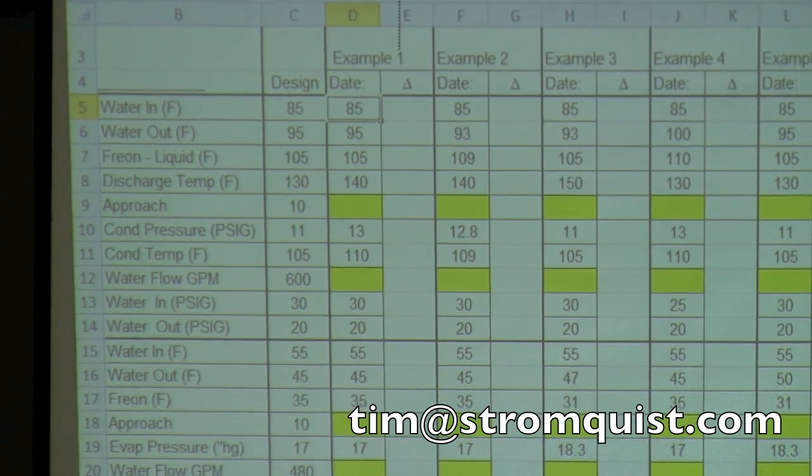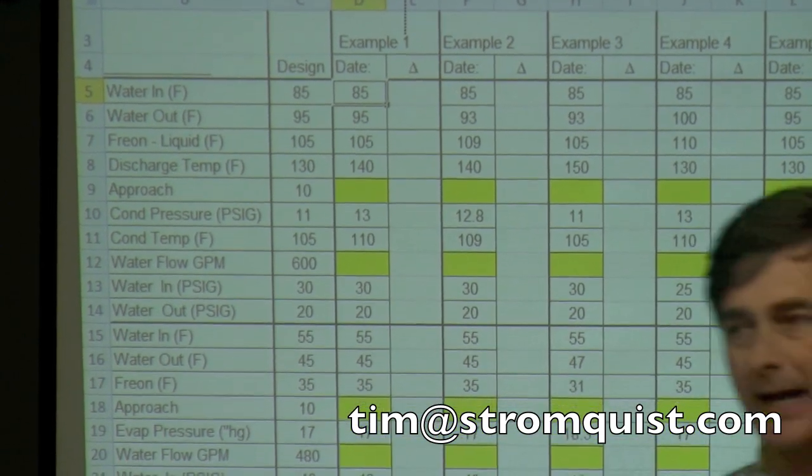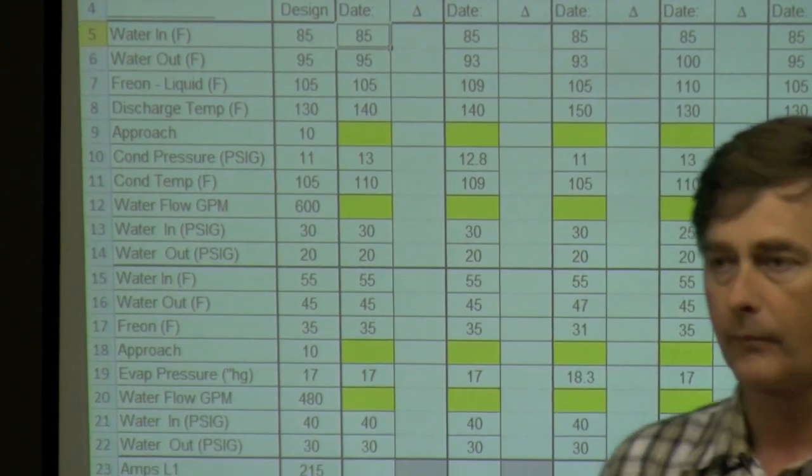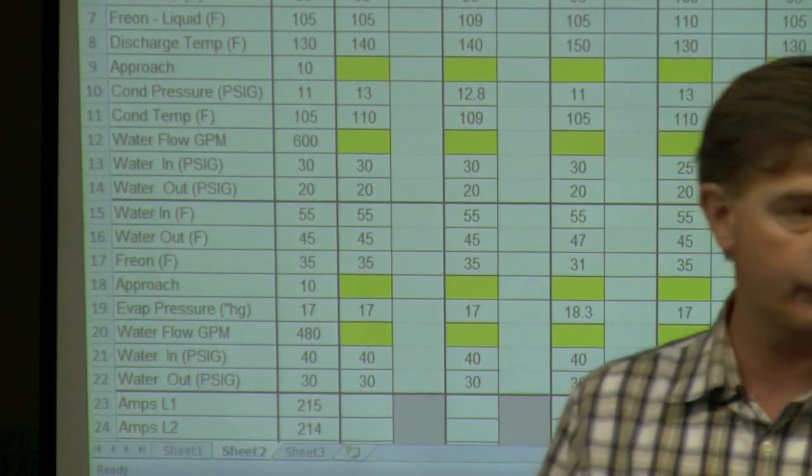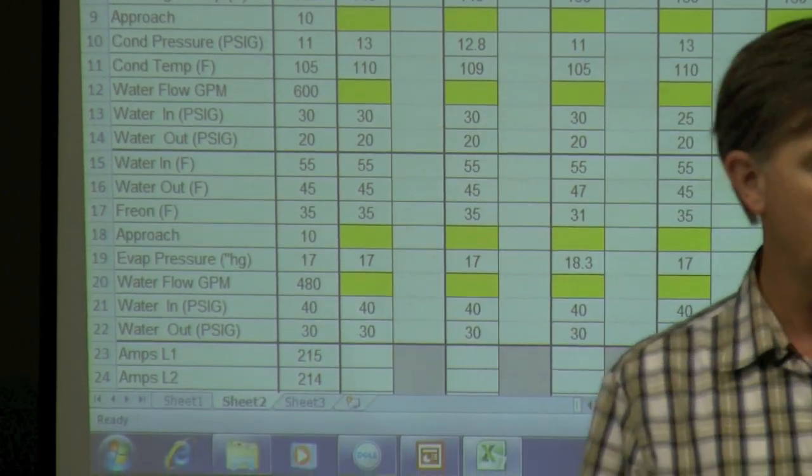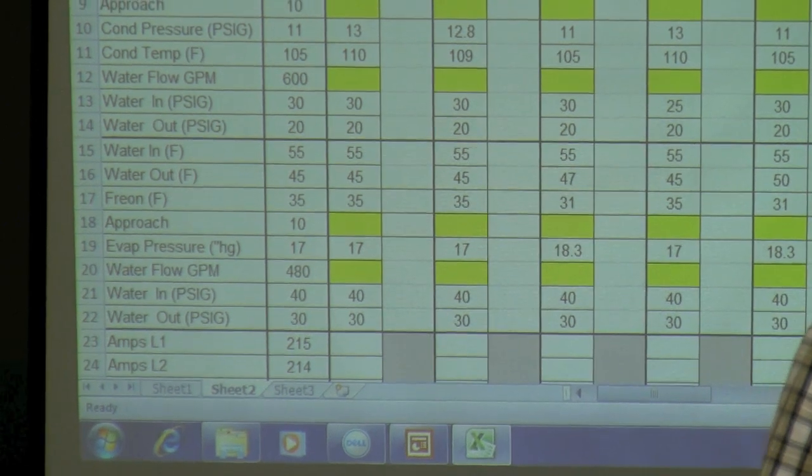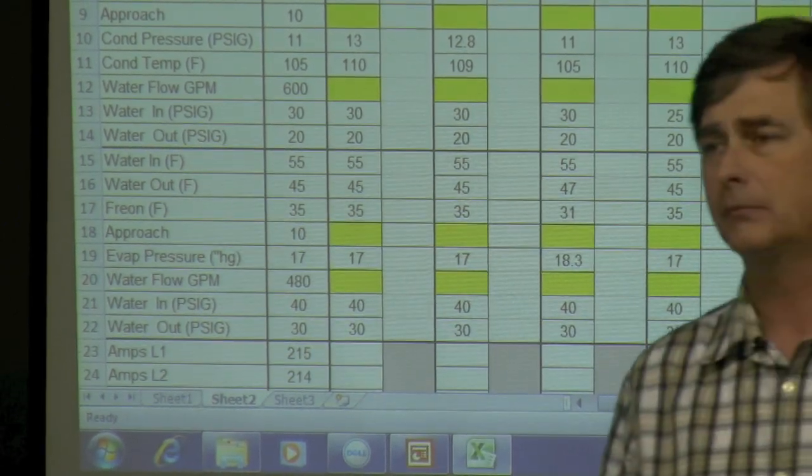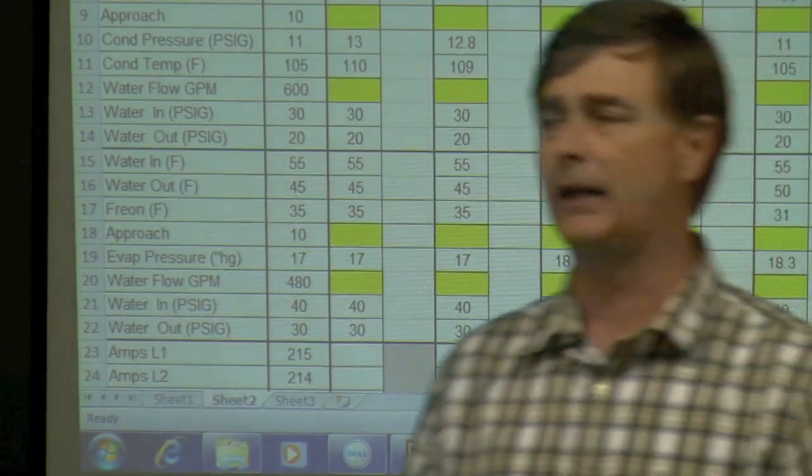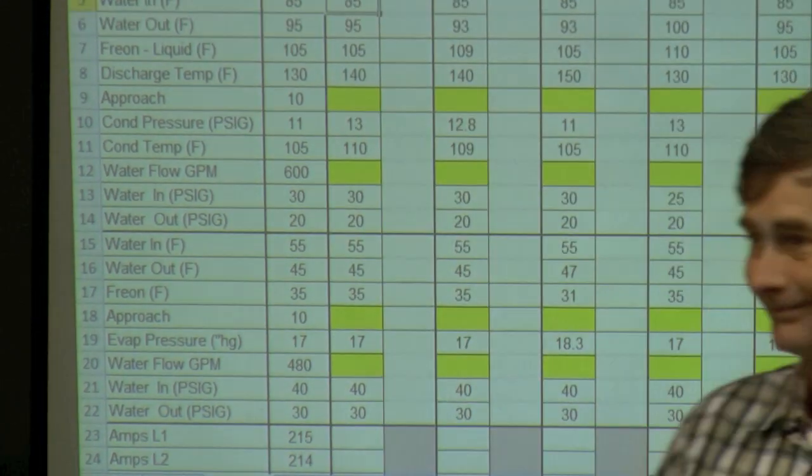All right? So, you've got an actual delta P and a design delta P. Divide the two, take the square root. And just a little hint. If the numbers are the same, you divide any number by itself, it's one. The square root of one is what? One.